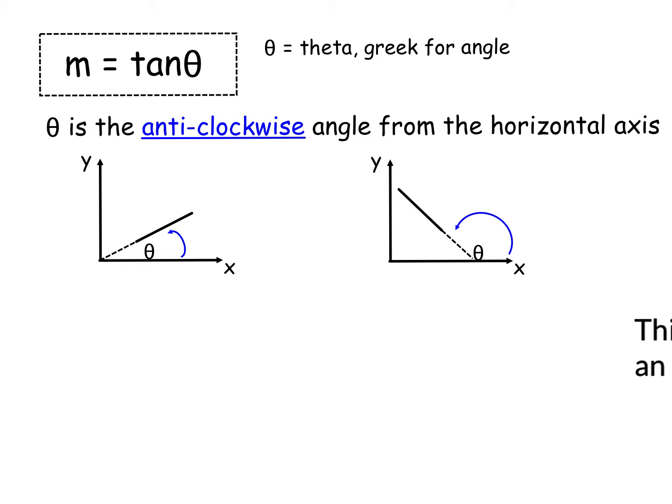Now, what's important to remember is that theta has got to be measured anticlockwise from the horizontal axis, so theta can either be acute or obtuse. So here is your acute one when it's measured that way, and obtuse when it's measured that way.